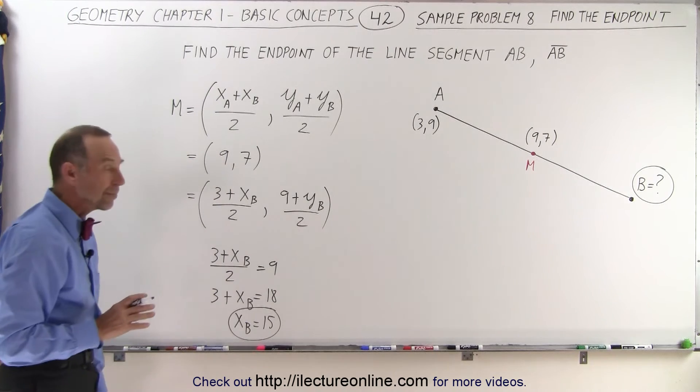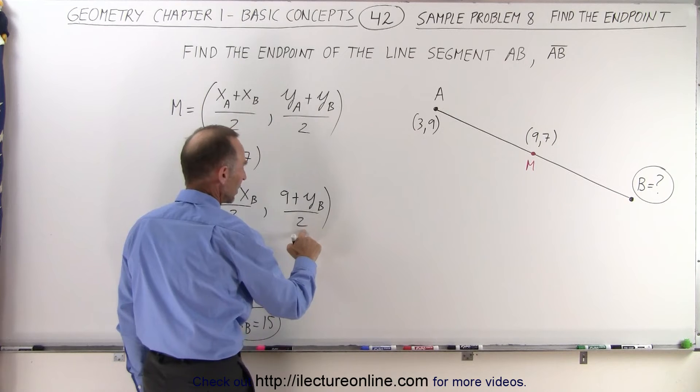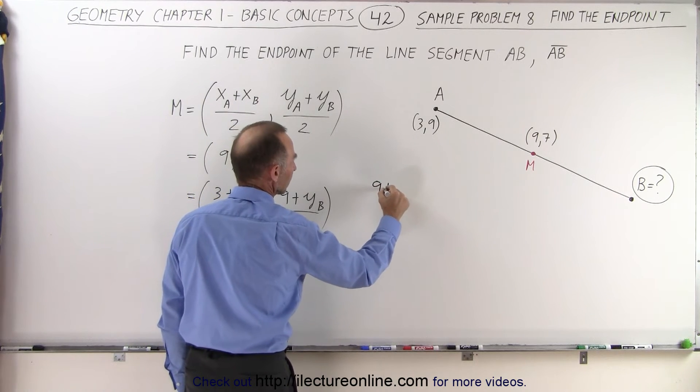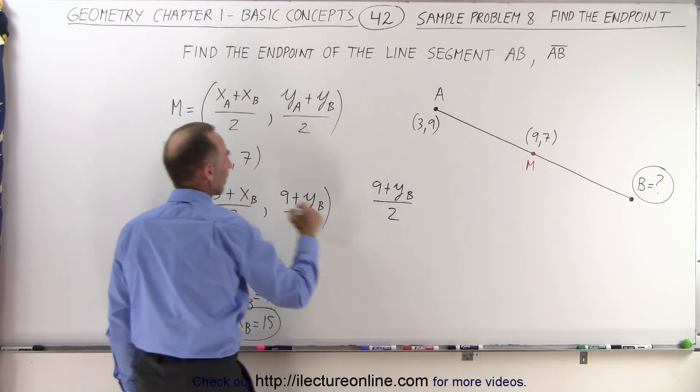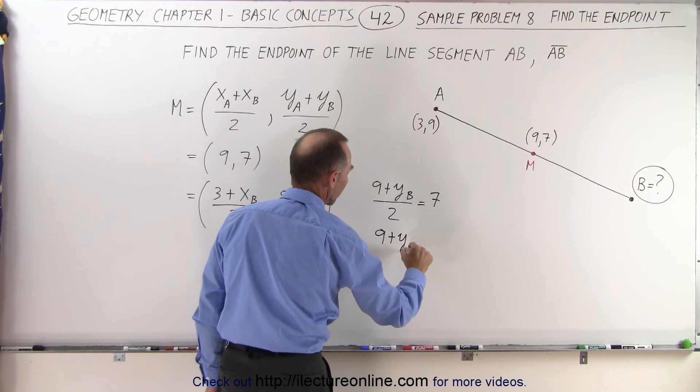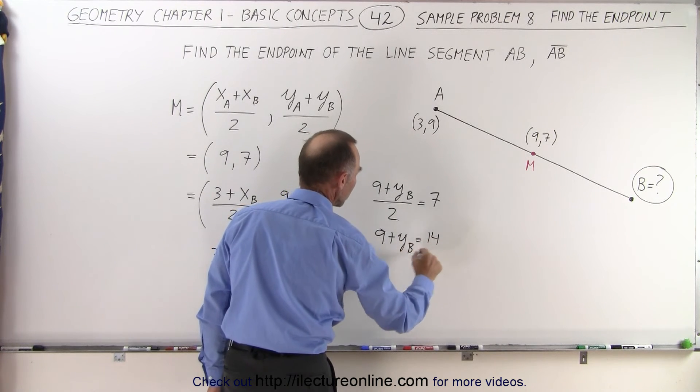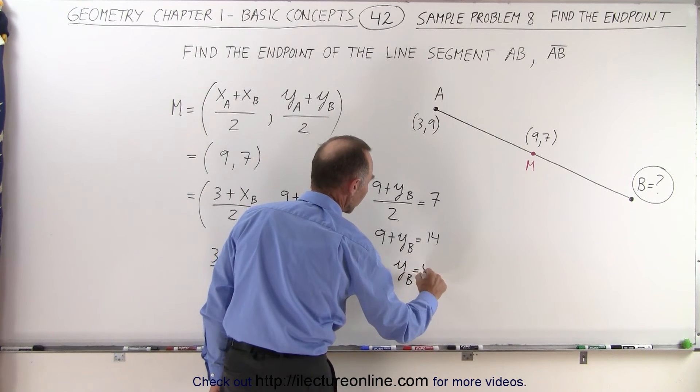Now we can do the same thing with the y coordinate. So we can say that 9 plus y sub b divided by 2 must equal 7. Multiplying both sides by 2, we get 9 plus y sub b is equal to 14. Subtracting 9 from both sides, y sub b therefore is equal to 5.